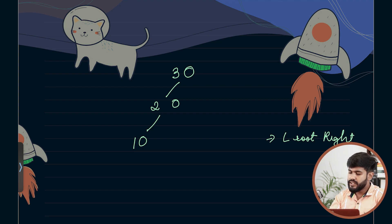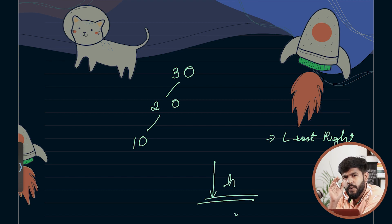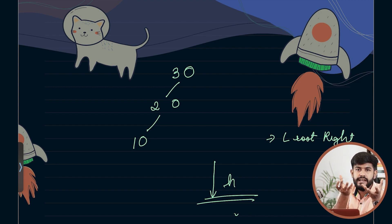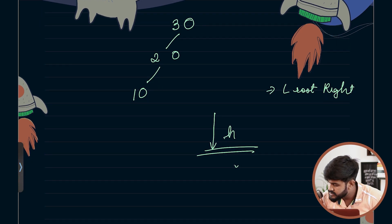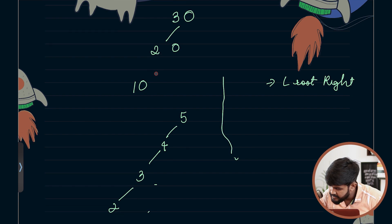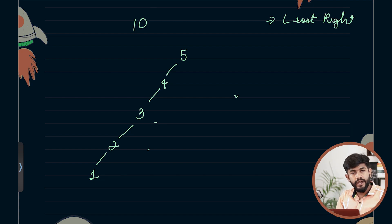What do we really mean by balanced? Balanced means we should have the height as low as possible. To achieve minimum height, we need to distribute elements on the left and right in a very concise manner. Consider a skewed tree with elements 5, 4, 3, 2, 1 — this is known as a skew tree, and it is also a valid BST. Its height is 5, which is the worst case.